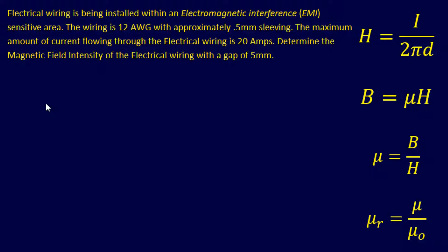For this first problem we're going to figure out the magnetic field intensity of electrical wiring. Electrical wiring is being installed within an EMI-sensitive area. The wiring is 12 gauge with approximately 0.5 millimeter sleeving. The maximum amount of current flowing through the wiring is 20 amps. Determine the magnetic field intensity of the electrical wiring with a 5 millimeter gap.